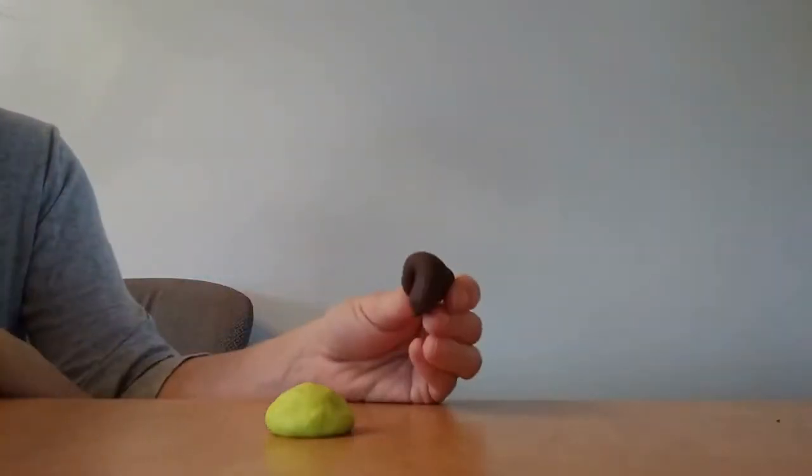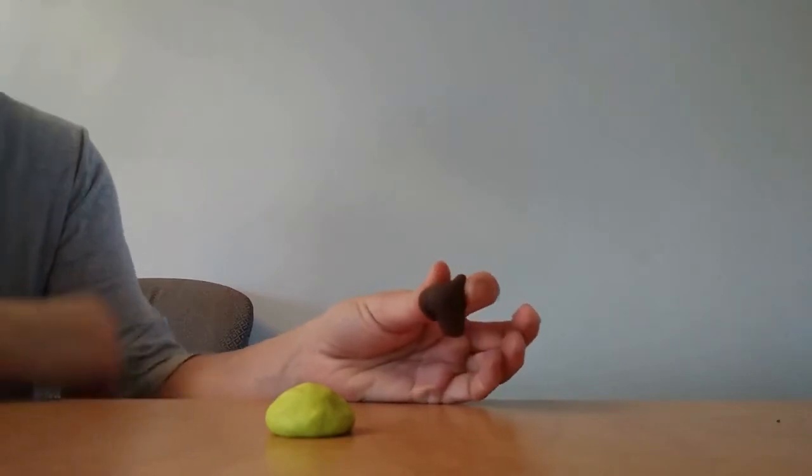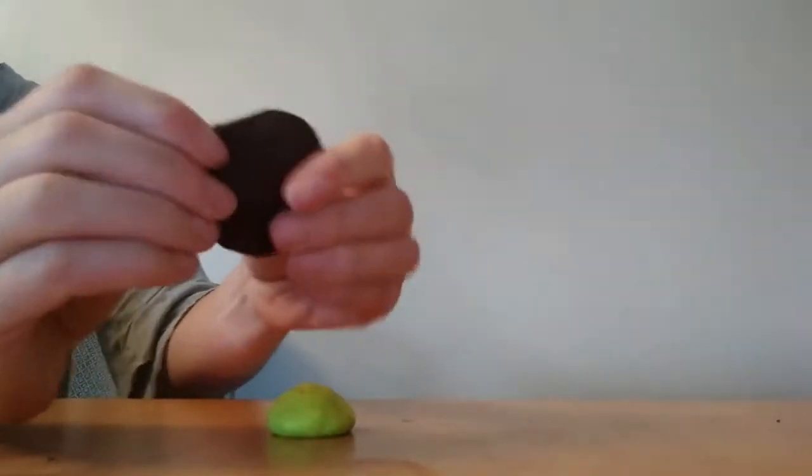Okay, next you're going to choose the color for the shell. I chose brown, but you can choose any color that you'd like. You're going to flatten it and kind of spread it out so it looks like a pancake.